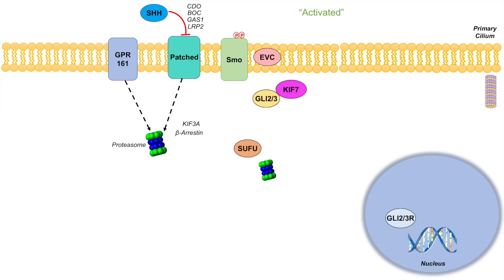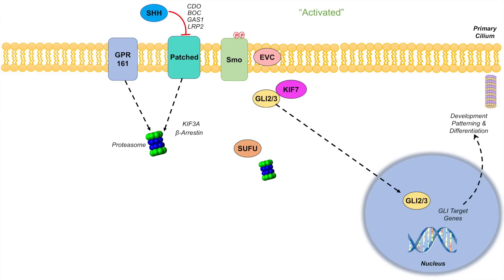When smoothened is within the membrane of the primary cilium, KIF7 aids in the movement of both GLE proteins and SUFU proteins through the cilium. GLE proteins then disassociate from SUFU. Within the primary cilium, the GLE proteins are not phosphorylated by the protein kinases, so they are not processed by the proteasome and remain in their full form — GLE2 and GLE3. In their full form, GLE2 and GLE3 translocate into the nucleus and induce expression of GLE target genes responsible for developmental patterning, differentiation, and homeostasis.